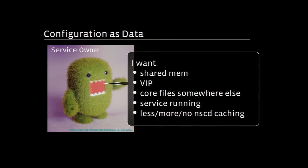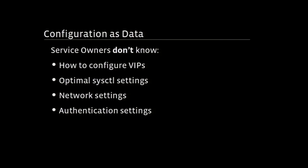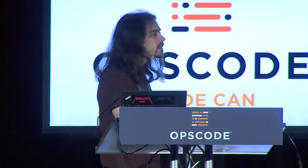What do I know? I know I need a VIP, or I have a memory-intensive application and I want more shared memory, or I'd like all my core files in some other place. But what I probably don't know is how to configure VIPs on my machine, or how to move where my core files are. I also probably don't know what every other optimal sysctl on my machine should be. I may not know what my netmask is, or what LDAP server I need to connect to.